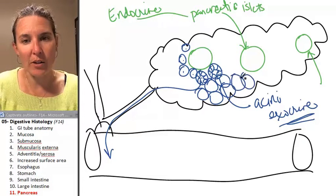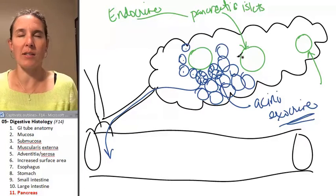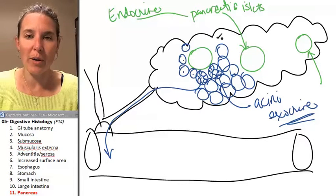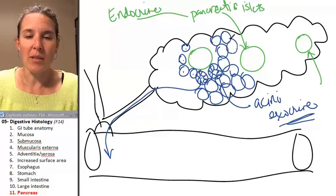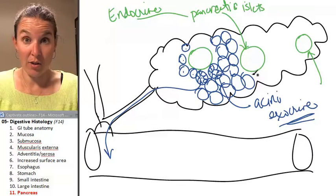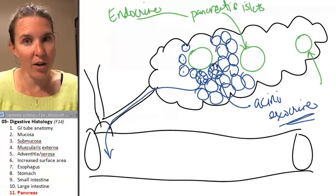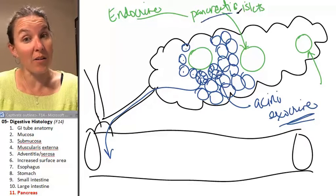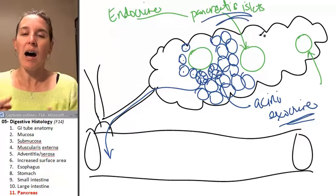Most of the pancreas, I think the number is like 95% of all pancreatic cells, I can't remember the exact number, are exocrine cells. And a very small number of them are actually endocrine cells found in the pancreatic islets.